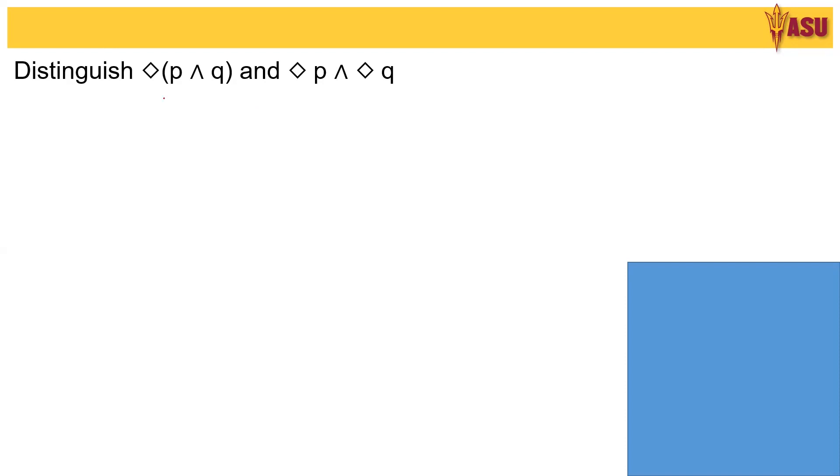What does diamond P, what does this imply? If we say X implies this formula then there exists a rule X comma Y such that Y has P and Q.